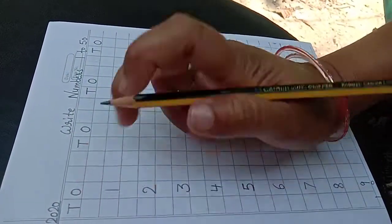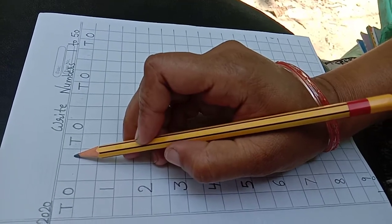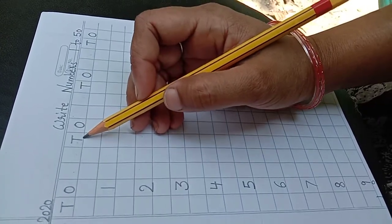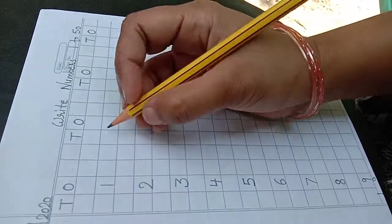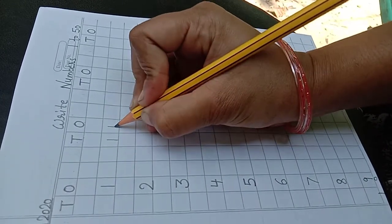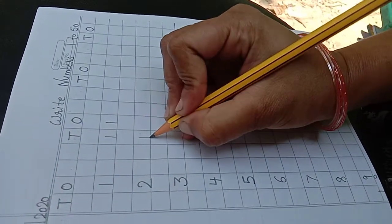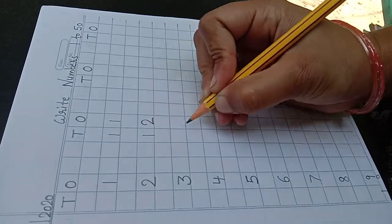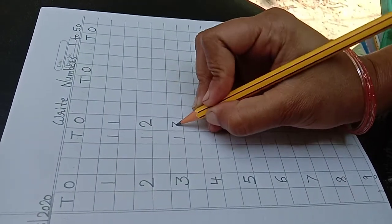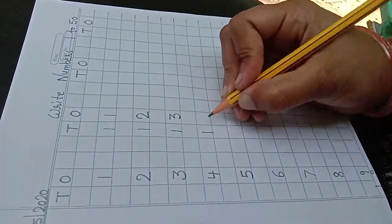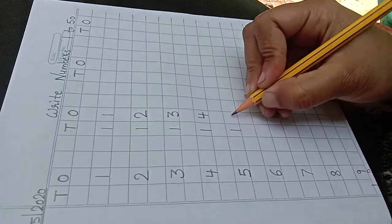Leave two boxes. One, two. Then again write T.O. Write one, one - eleven. One, two - twelve. Thirteen, fourteen, fifteen.